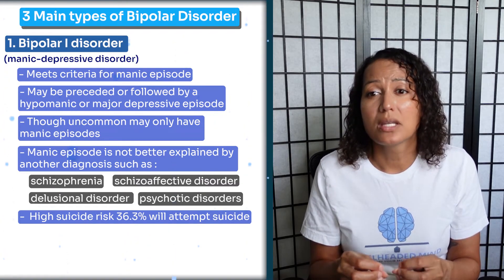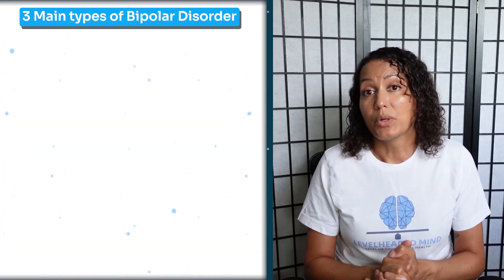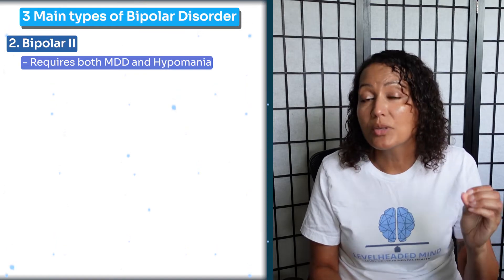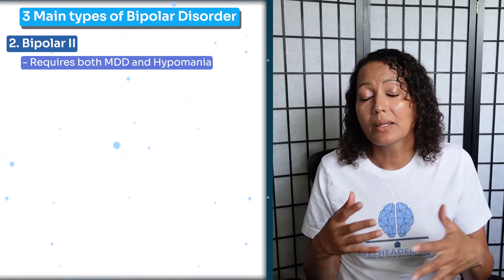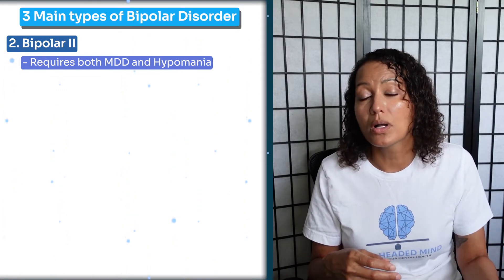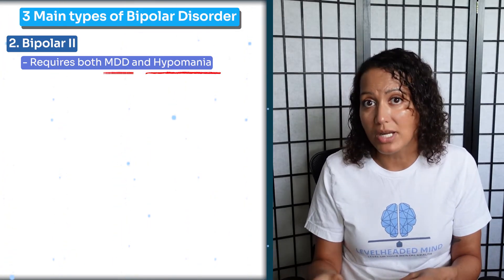Bipolar disorder is considered a very severe mental illness, with a suicide rate 10 to 30 times higher than the general population. When we look at Bipolar II, it requires both major depressive disorder criteria and hypomania. Unlike Bipolar I, where you can be diagnosed with just mania, in Bipolar II you must have both hypomanic episodes and major depressive episodes.